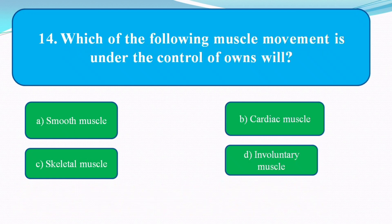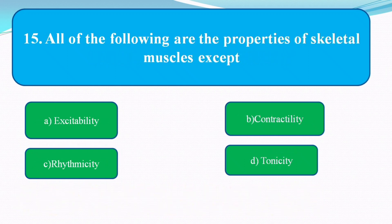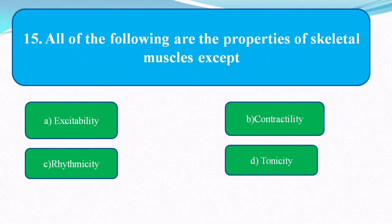Which of the following muscle movements is under the control of will? The options are: smooth muscle, cardiac muscle, skeletal muscle, involuntary muscle. The answer is skeletal muscle.